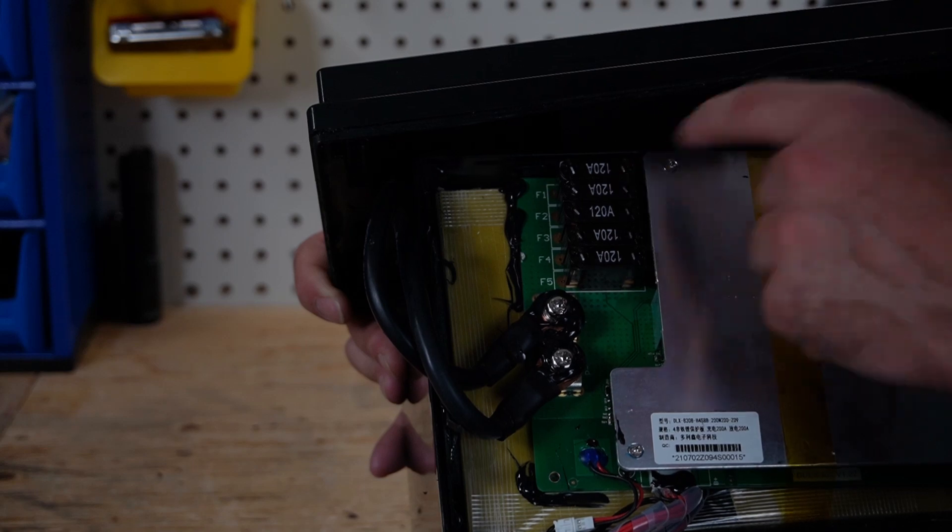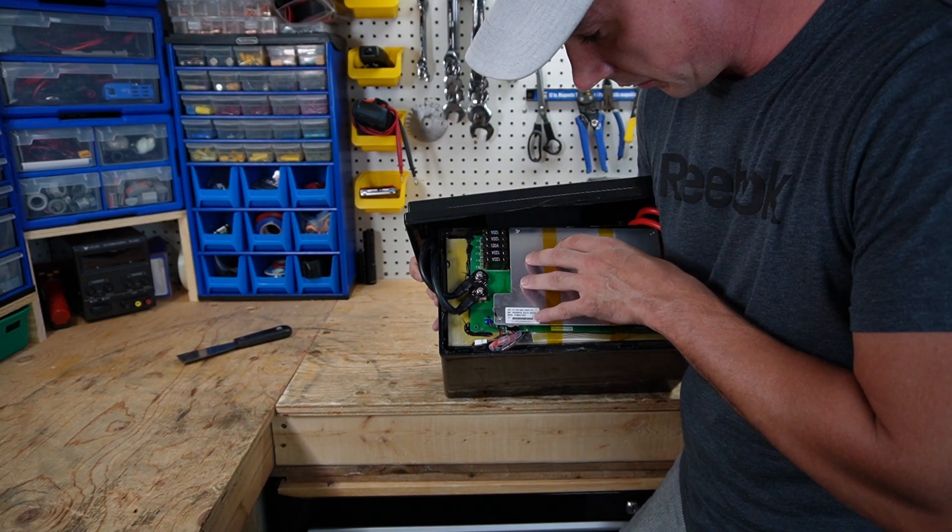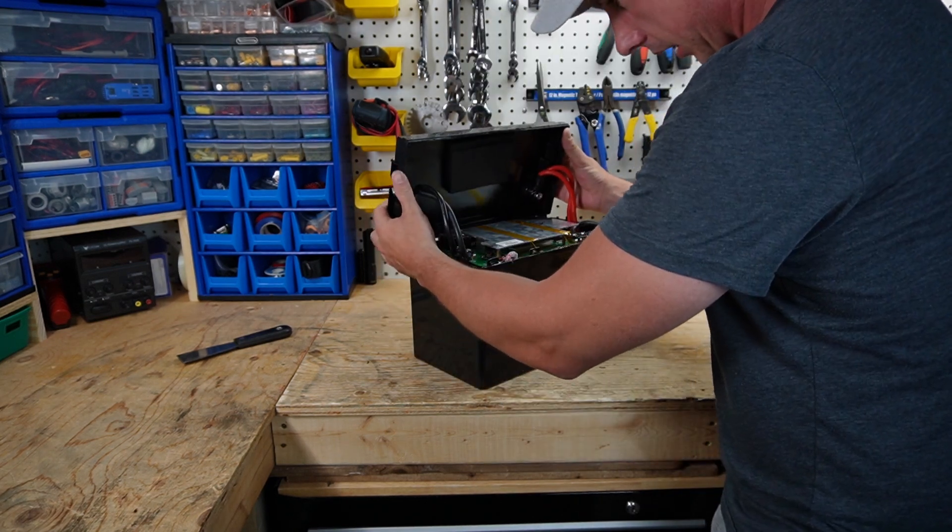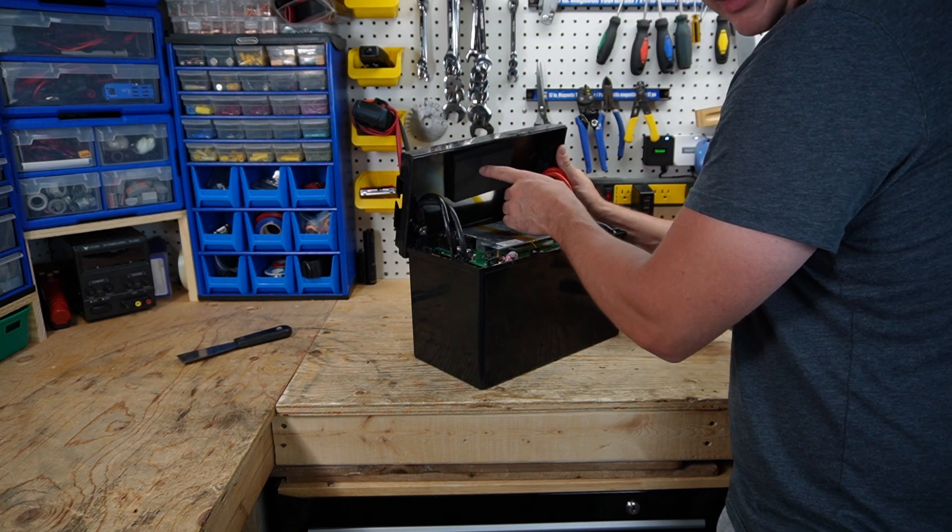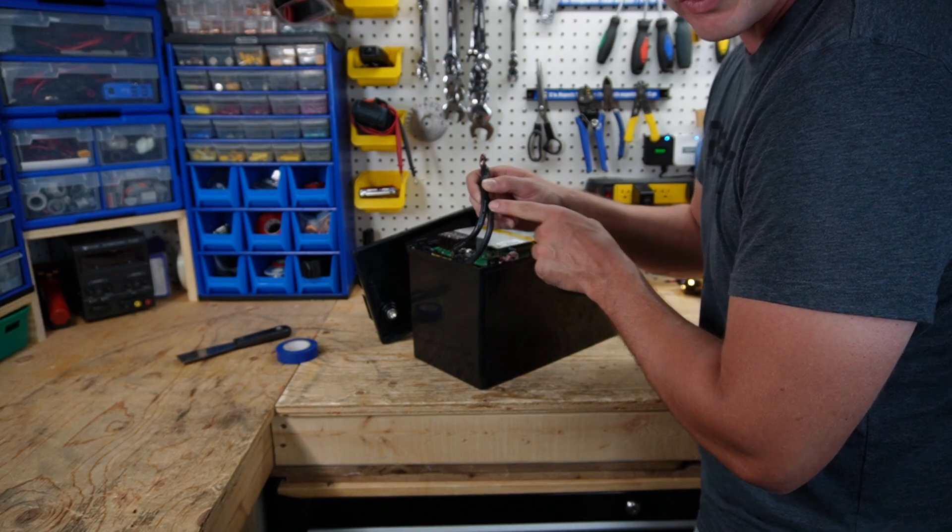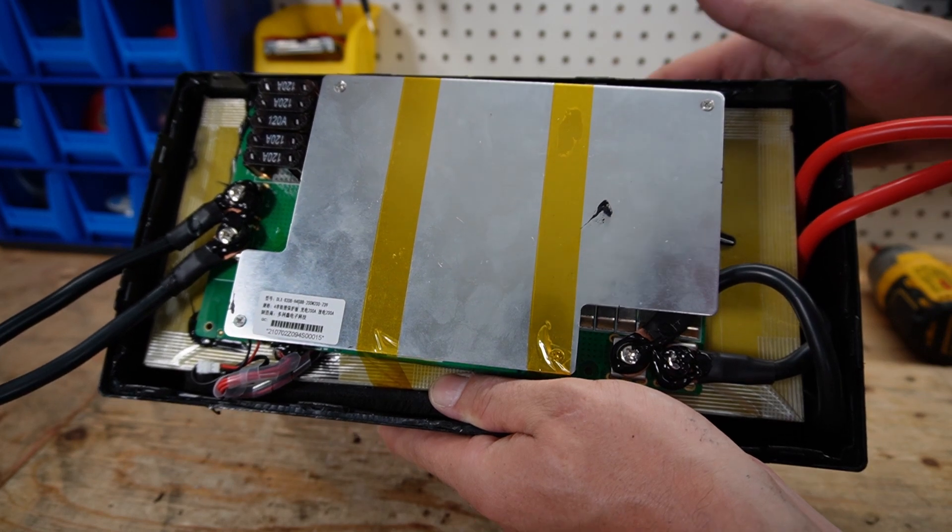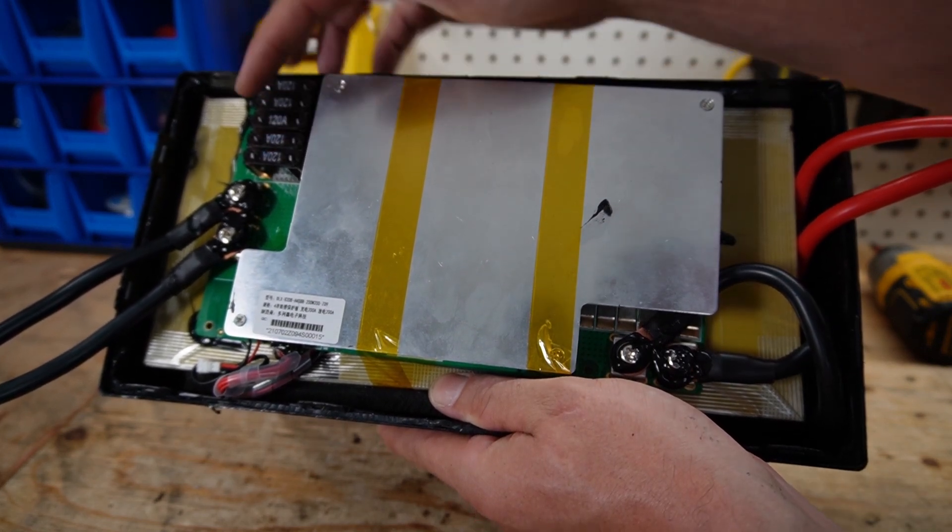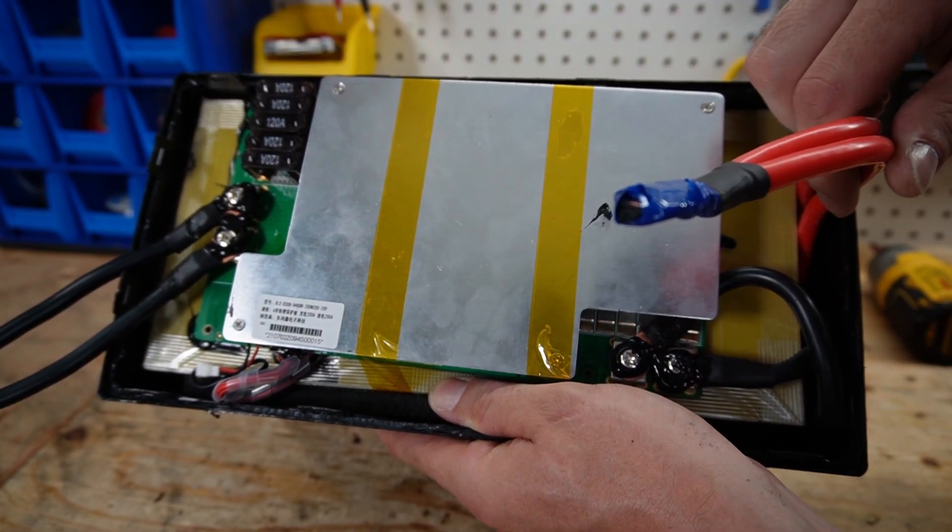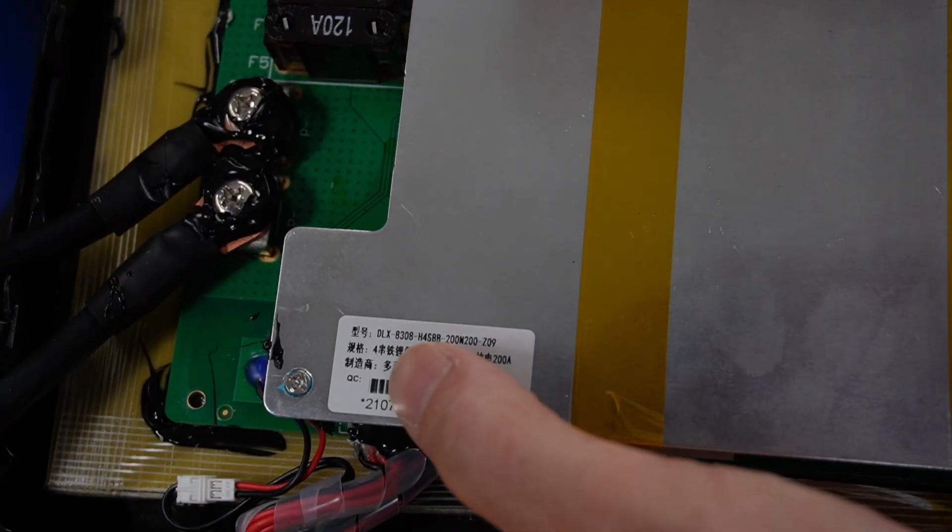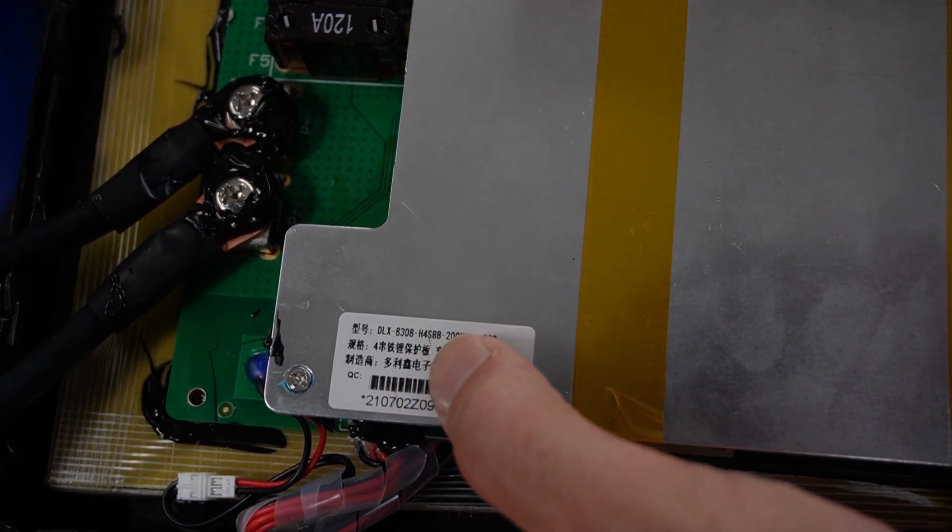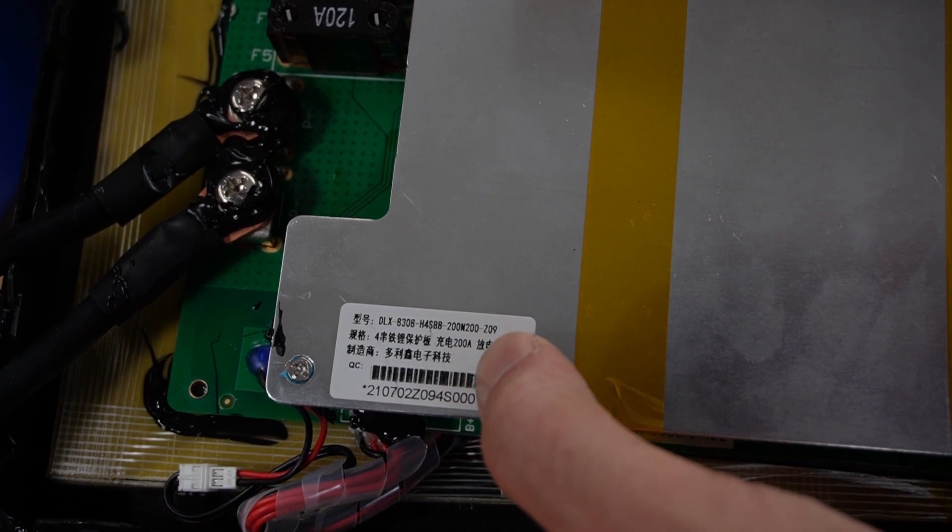What it looks like is that this BMS is mounted to this PCB with these fuses on here. So I'm going to take the battery positive negative off to get this case, this lid off. This is the negative wire. We have two 6AWG 200-degree wire. We have fuses up here, our P negative and our B negative over here, our positive that goes down. A BMS on top here. This BMS is a DLX8308H4SBB200N200Z09.